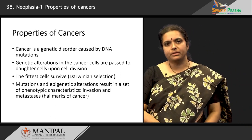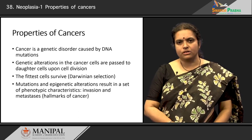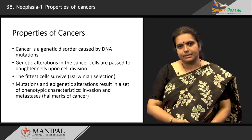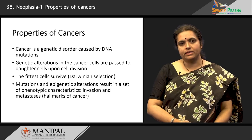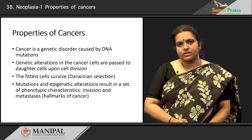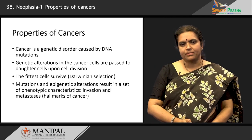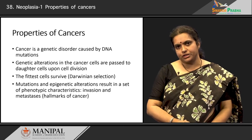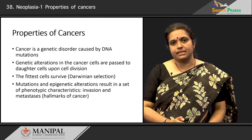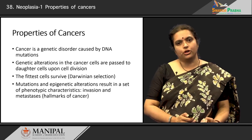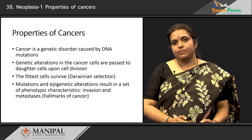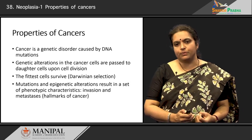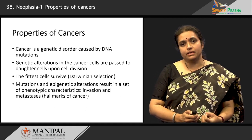We will move on to the properties of cancers. Before we get into the details, there are some general rules and properties that we need to understand. The first and foremost is that cancer is a genetic disorder caused by DNA mutations — this is central to understanding how cancer occurs. The second point is that these genetic alterations in the cancer cell are passed to daughter cells upon cell division, since these changes occur within the genes of the cells.